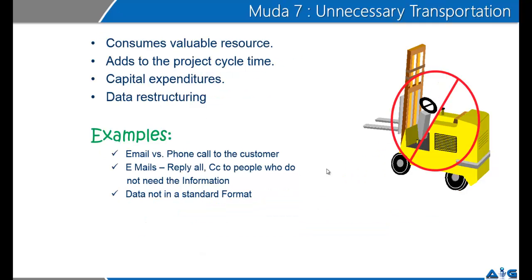The seventh kind of waste is unnecessary transportation. While unnecessary motion refers to humans, transportation refers to resources. Unnecessary transportation adds to project cycle time, consumes valuable resources, involves capital expenditure, and creates risk of breakages. Examples include sending emails with reply-all or CC to people who don't need the information, or data not in a standard format. You must work at identifying and eliminating these seven wastes in your business.